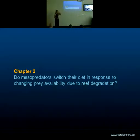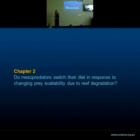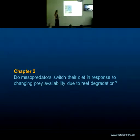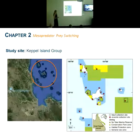This brings me to the second chapter. My second question is: do mesopredators switch their diet in response to changing prey availability due to reef degradation? The importance of this is that if prey communities are changing on coral reefs due to habitat degradation, and mesopredators have sufficient plasticity in their diet, then they'll be able to shift their diet to take advantage of this changing resource base and thereby potentially ameliorate the sublethal effects we're looking for in the first chapter. The fieldwork for this chapter was carried out in the Keppel Islands, on the southern GBR just off Rockhampton, which has also been the subject of a long-term monitoring program.